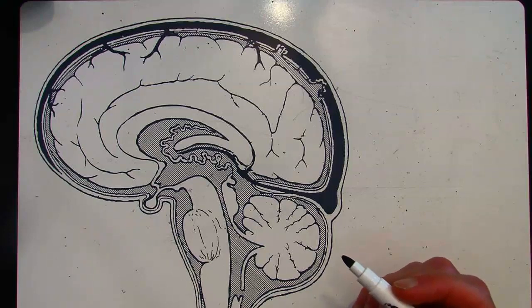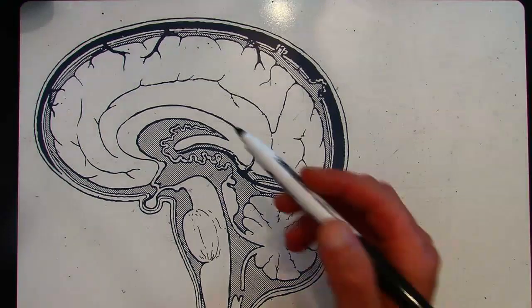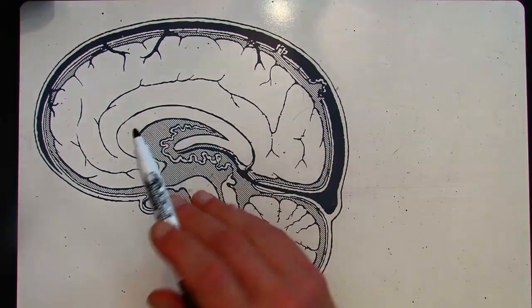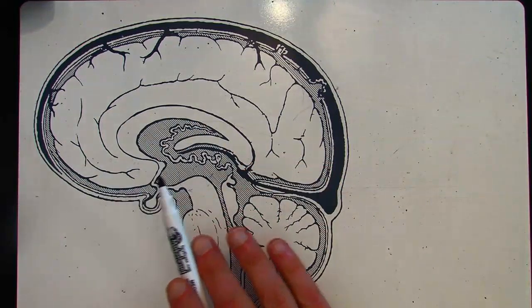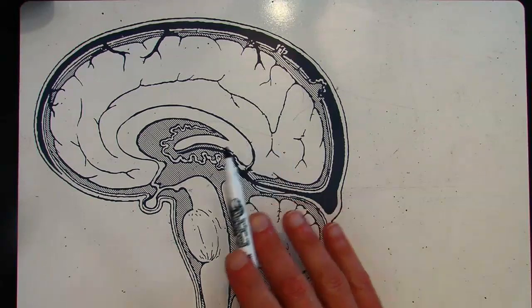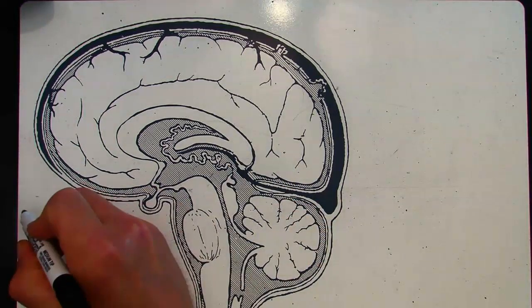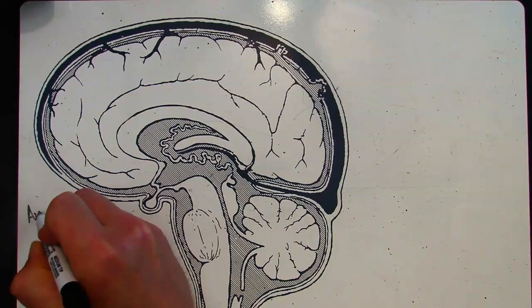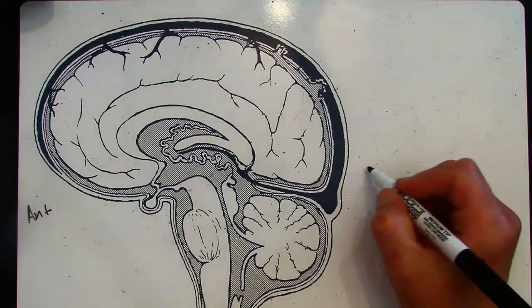I wanted to walk through with you the structures on the brain. Now this is a two-dimensional cross-section of the brain, a mid-sagittal cross-section, and this is the anterior and this is the posterior.